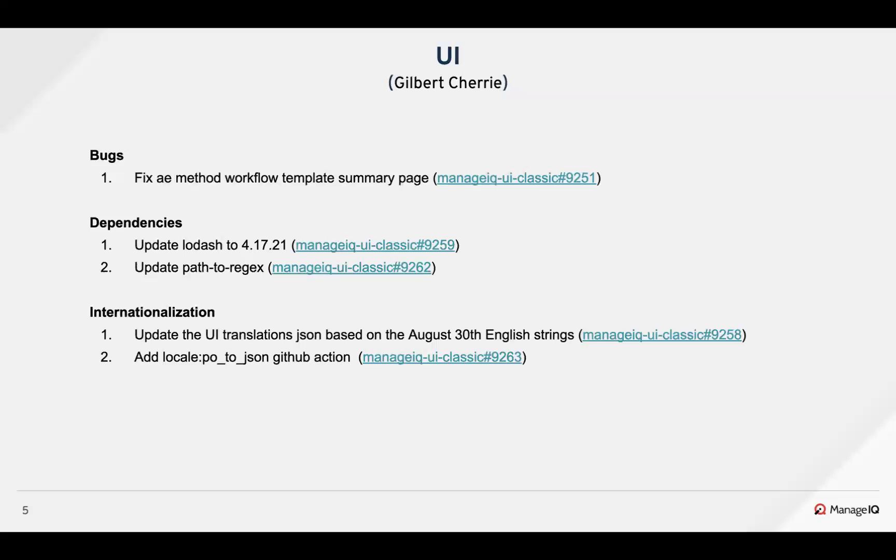On the UI side, one big bug was fixed: fixing the A method workflow template summary page — I'll have some screenshots for that. There were also some dependency updates for security issues. We updated Lodash to fix a critical issue, and path-to-regex had a couple of high severity issues that we dealt with this sprint.